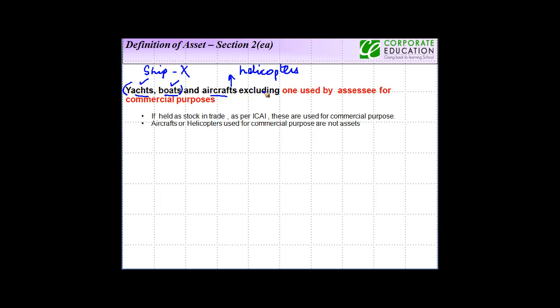So yachts, boats and aircrafts excluding ones used by the assessee for commercial purposes. So if you have any yacht, boat or aircraft, that will be included in the asset.